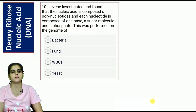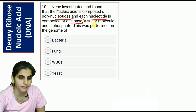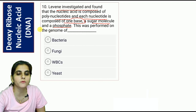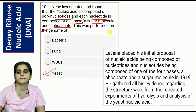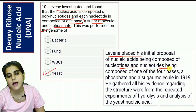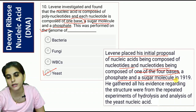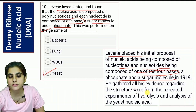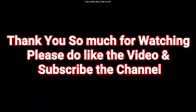Question ten, the last question: The scientist Levene investigated and found that nucleic acid is composed of polynucleotides, and each nucleotide is composed of one base, a sugar molecule, and a phosphate. This was performed on the genome of which organism? The correct option is D, yeast. Levene proposed that nucleotides are composed of one of the four bases, a phosphate, and a sugar. He gathered evidence from repeated experiments of hydrolysis and analysis of yeast nucleic acid.